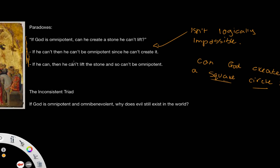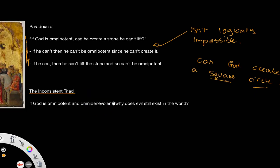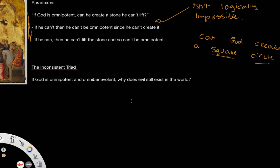Another less sound argument is called the inconsistent triad, and it's effectively the problem of evil. The idea is, if God is omnipotent and he's also omnibenevolent - so as we remember, if God is all-powerful and also all-loving - then why does evil exist in the world?